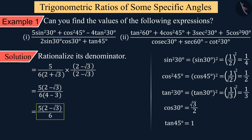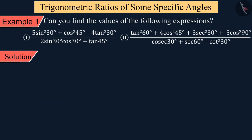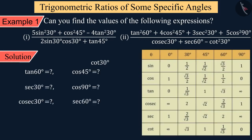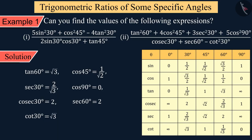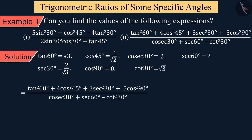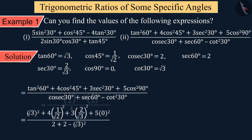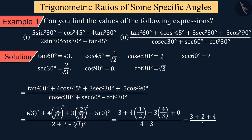Similarly, for the second part of the example, we get tan 60°, cos 45°, sec 30°, and all other values with the help of the table, and solve by putting them into the above equation. This gives the value of the equation as 9.